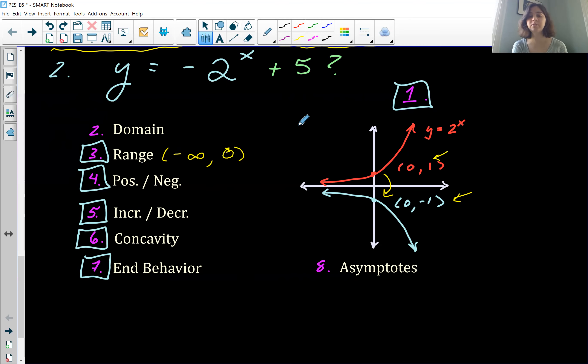Also, feel free to pause this at any point if you want and try them yourselves before I give the answer. I personally work that way. So maybe you want to do that too. Moving on, though. So number four, positive and negative, obviously going to change. It's going to be negative the entire time now. Increasing and decreasing.